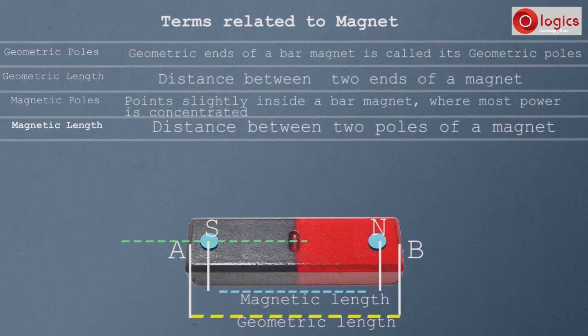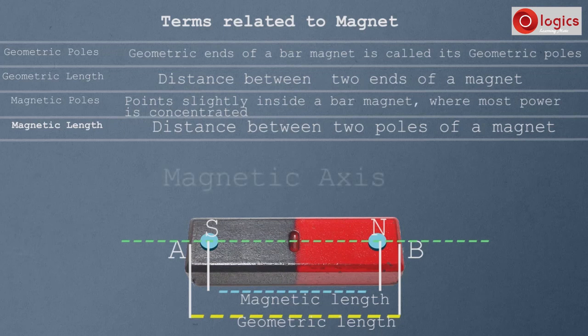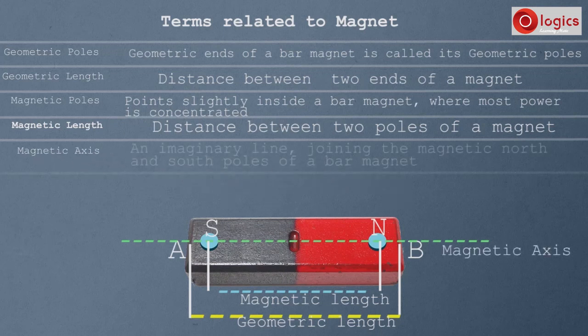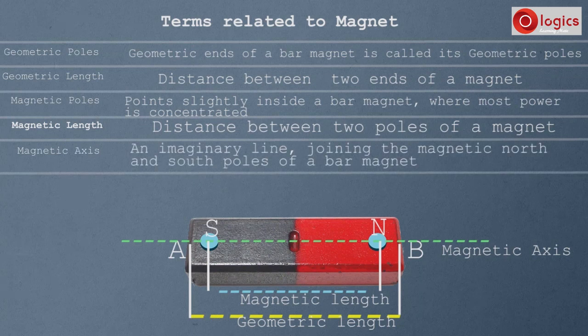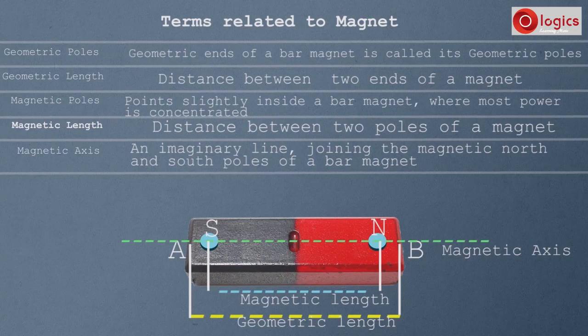This is line joining two poles of magnet. This line is magnetic axis. An imaginary line joining the magnetic north and south poles of a bar magnet is called its magnetic axis.